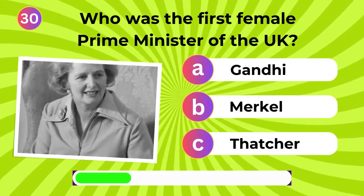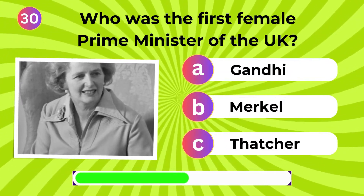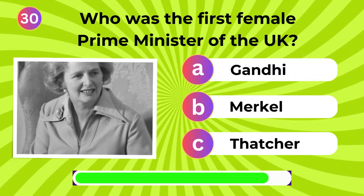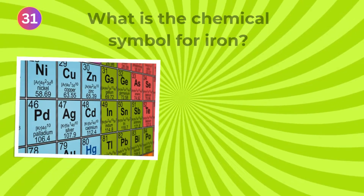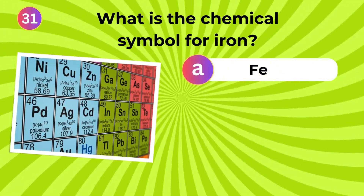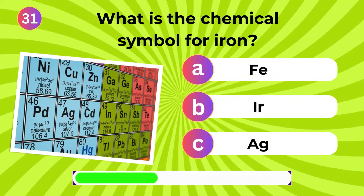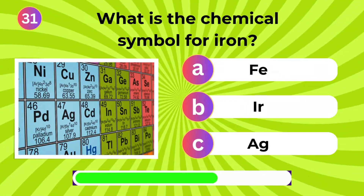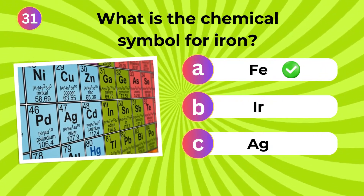Who was the first female Prime Minister of the UK? Thatcher. What is the chemical symbol for iron? Fe.